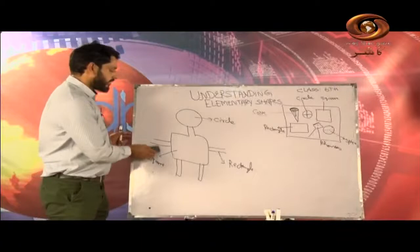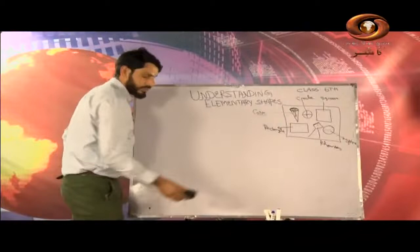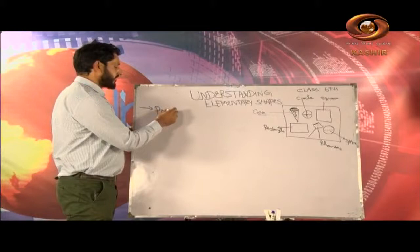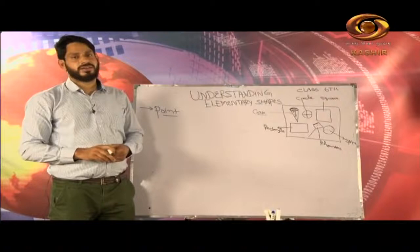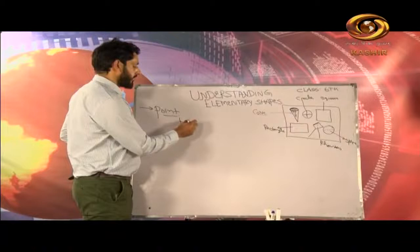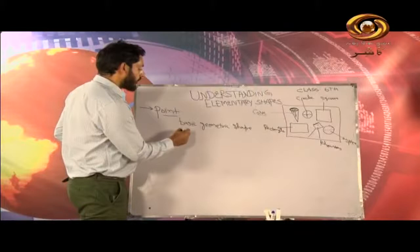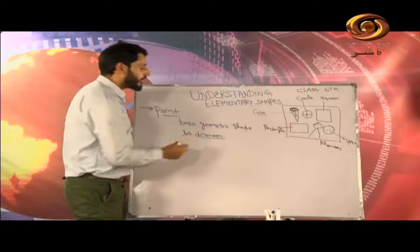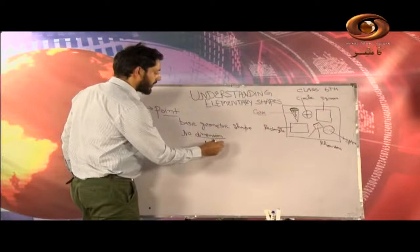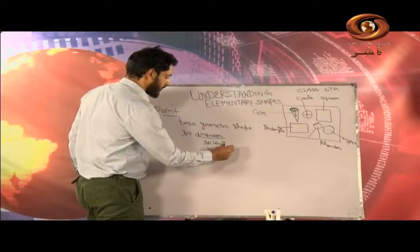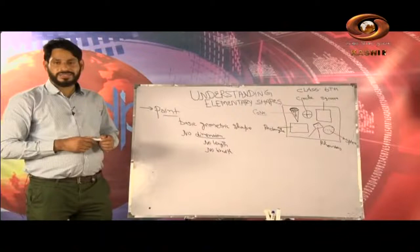Next, the starting point of this chapter is the point. What is a point? A point is said to be the basic geometric figure, or you can say basic geometric shape. The basic geometric shape is the point, and it is said to be having no dimension. By no dimension, I mean we do not say it has some length — no length and no breadth. So, a point is dimensionless; we cannot say that a point has some length or some breadth.